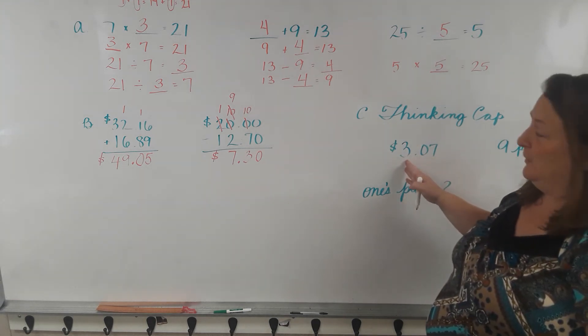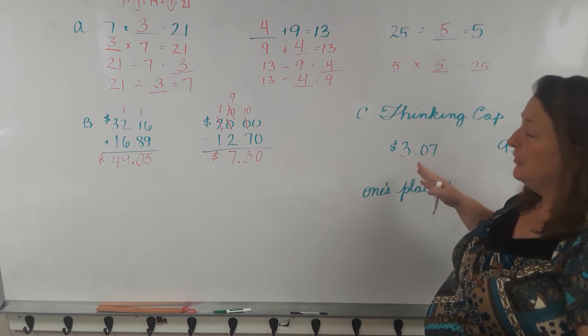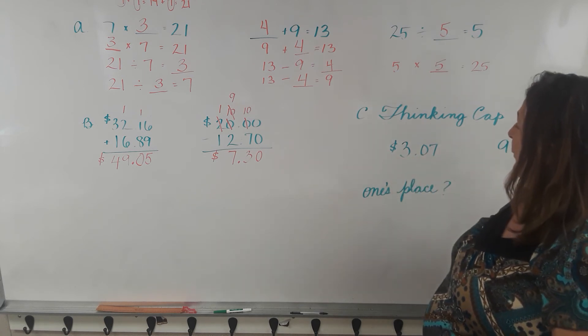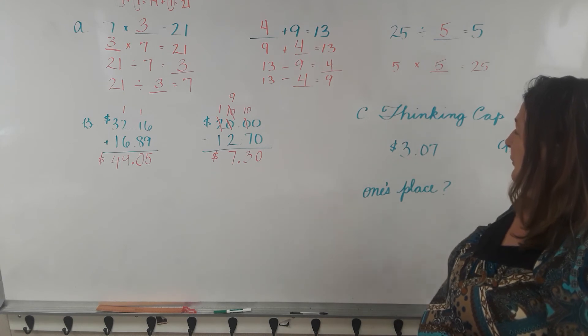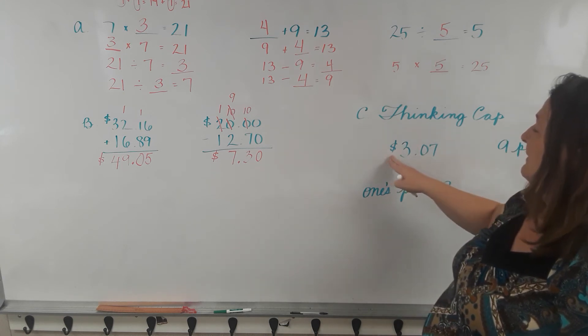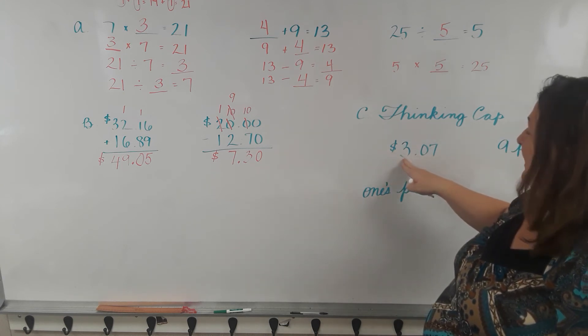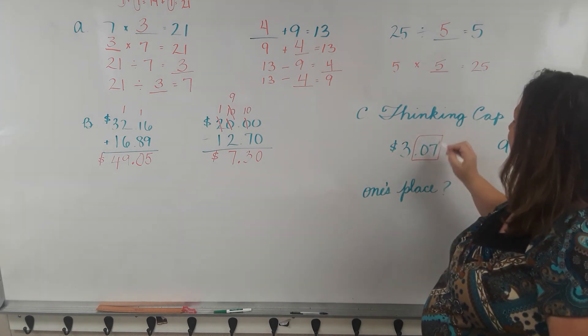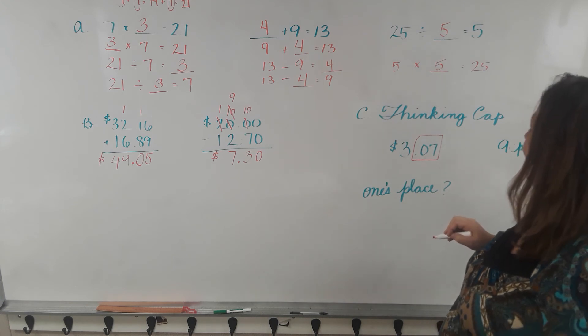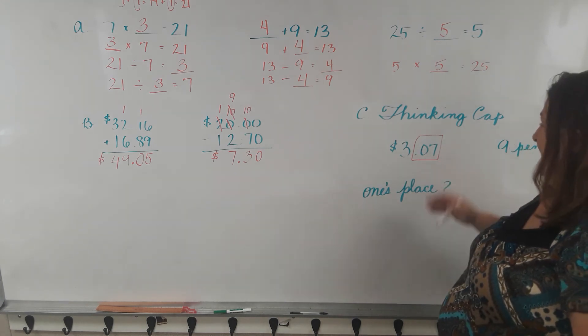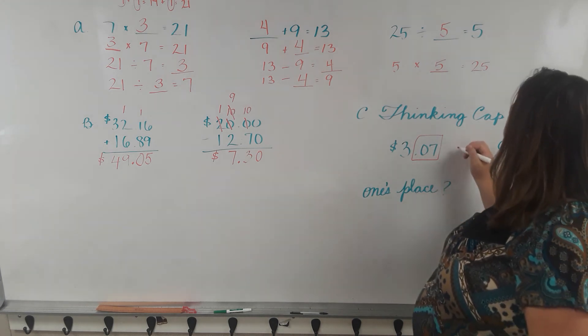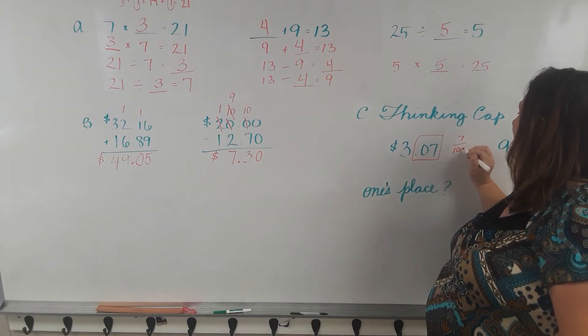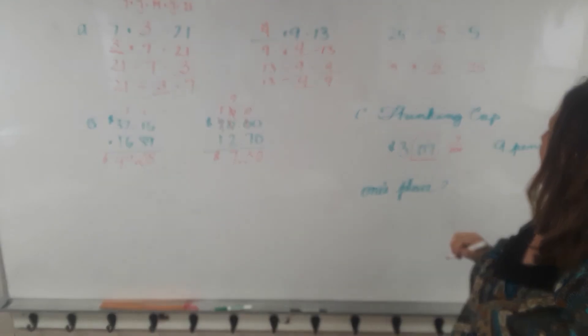3 is in the ones place because it's 3 dollars. If it were 23 dollars, the 2 would be in the tens place and the 3 would be in the ones place. But it's 3 dollars, so 3 is in the ones place. This number after the decimal point is like a fraction. It's like 7 one hundredths of a dollar, because there are 100 pennies in a dollar.